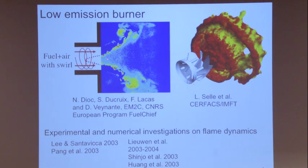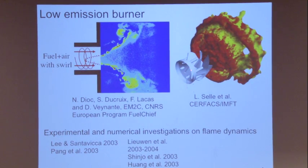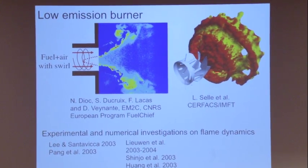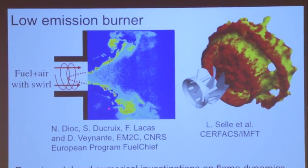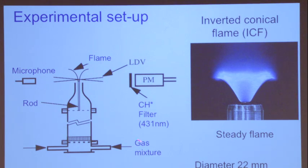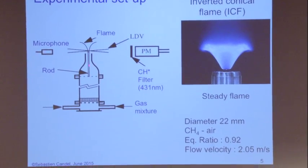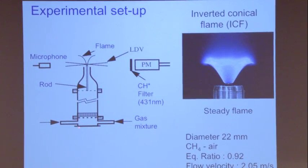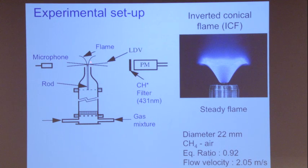In many circumstances you have flames which have a V-shape — for example, when you have a swirling system, the flame looks like a V more or less. Here is a typical experimental flame in a swirling flow, and you can see the flame has this V-shape. In this simple device, there is no loudspeaker — it's just a rod. The flame is sitting here, and for certain conditions this system by itself becomes unstable. There are bands of instability.